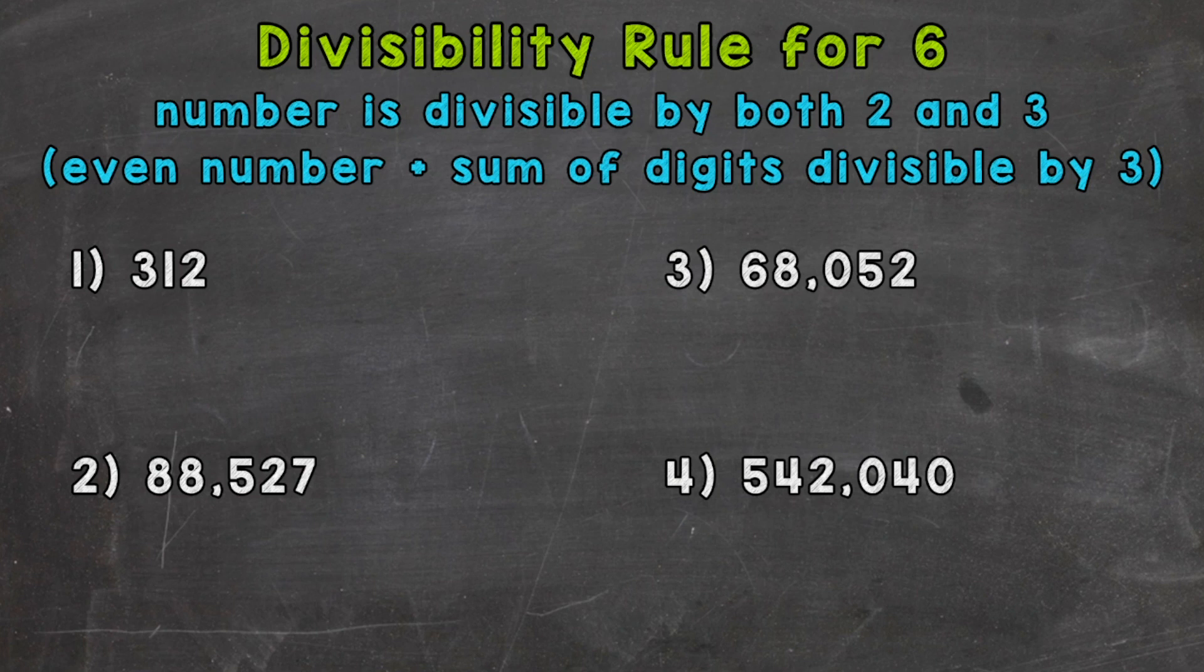So if a number is divisible by both 2 and 3, that number is also divisible by 6.